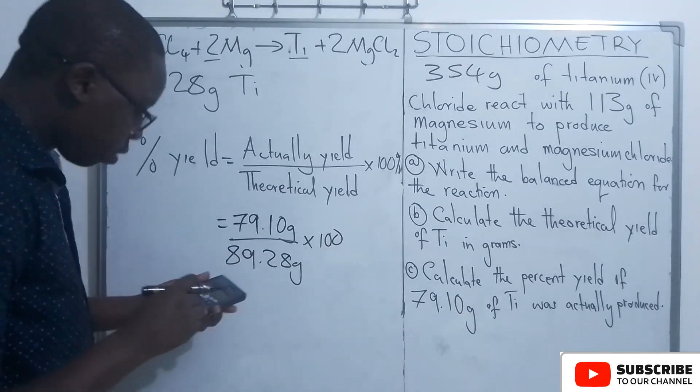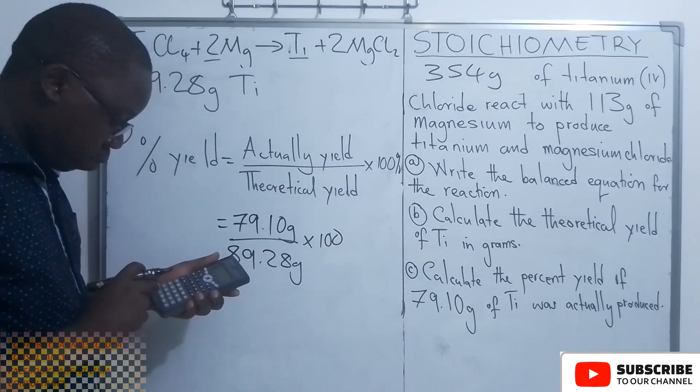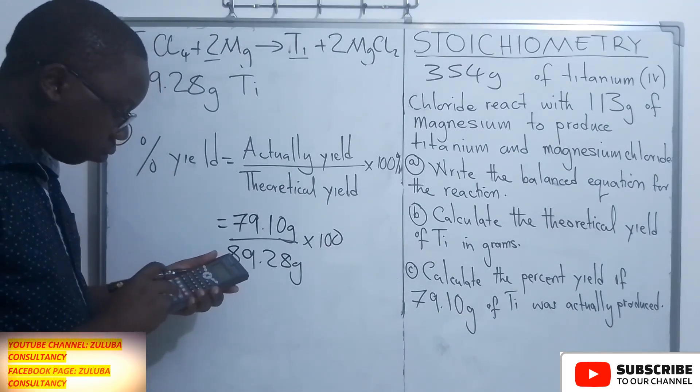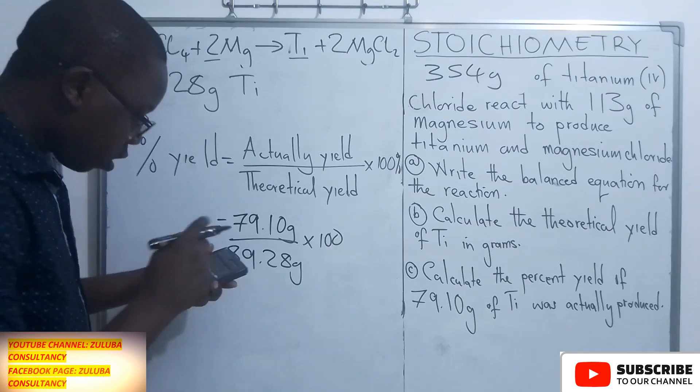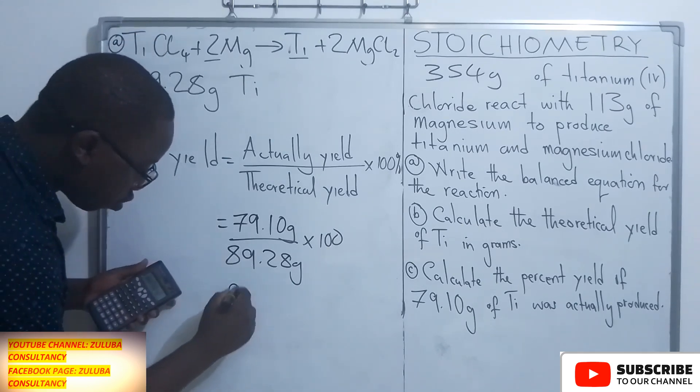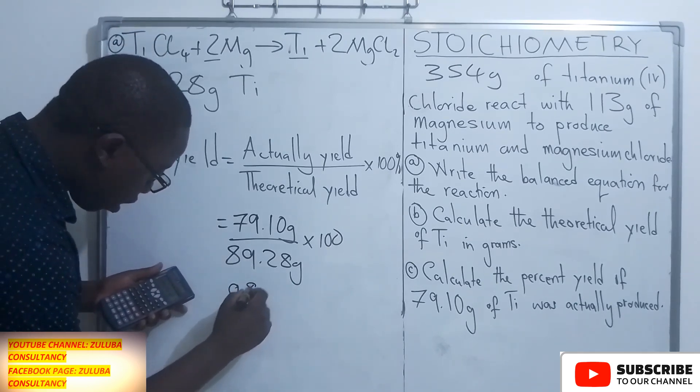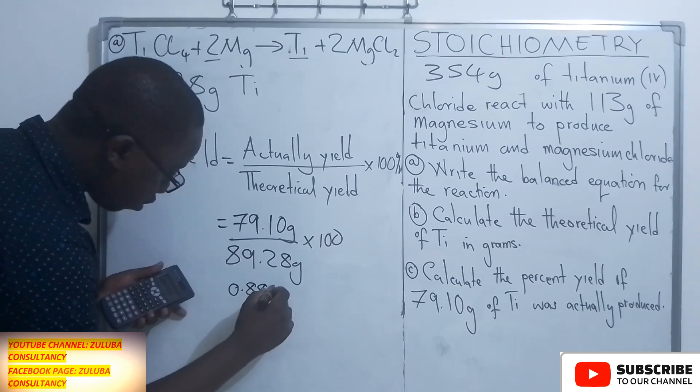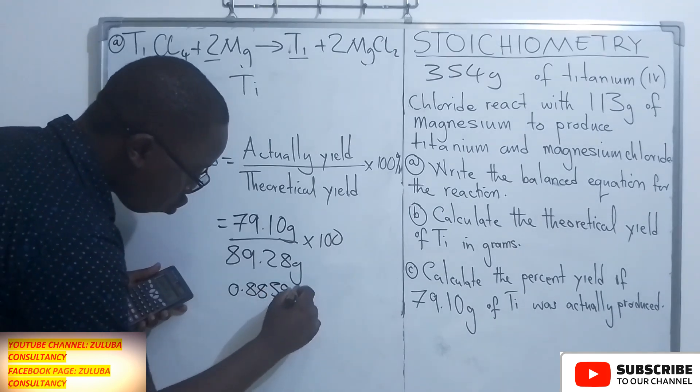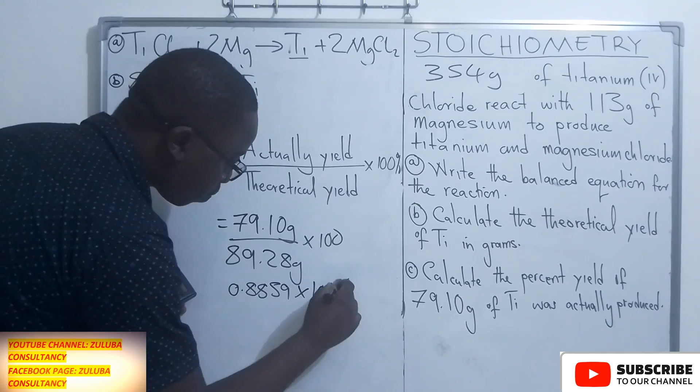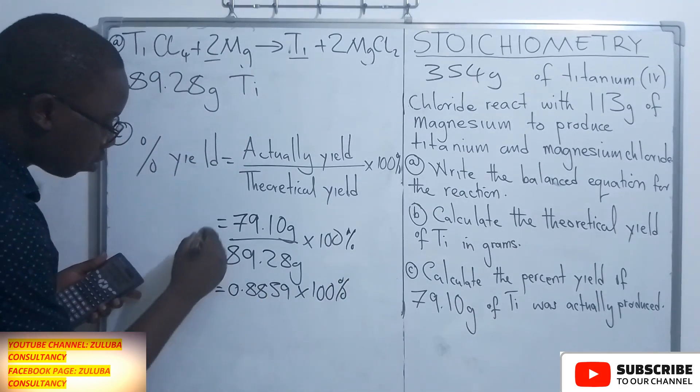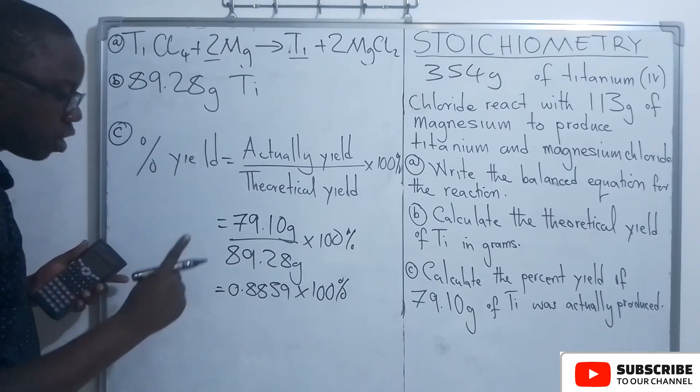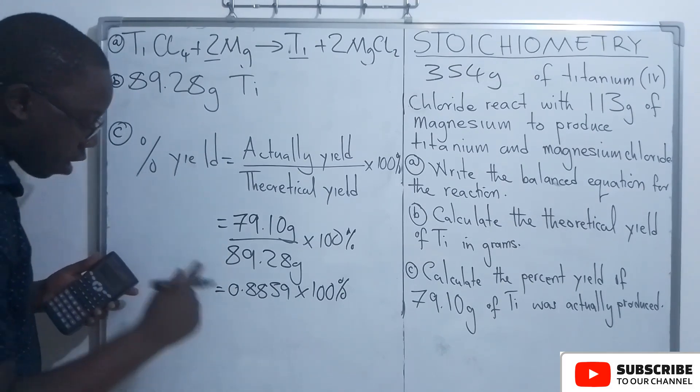So let's say 79.10 divided by 89.28. It is giving us 0.8859. We are multiplying this with 100%. So 100% is the maximum percentage that the yield can have.